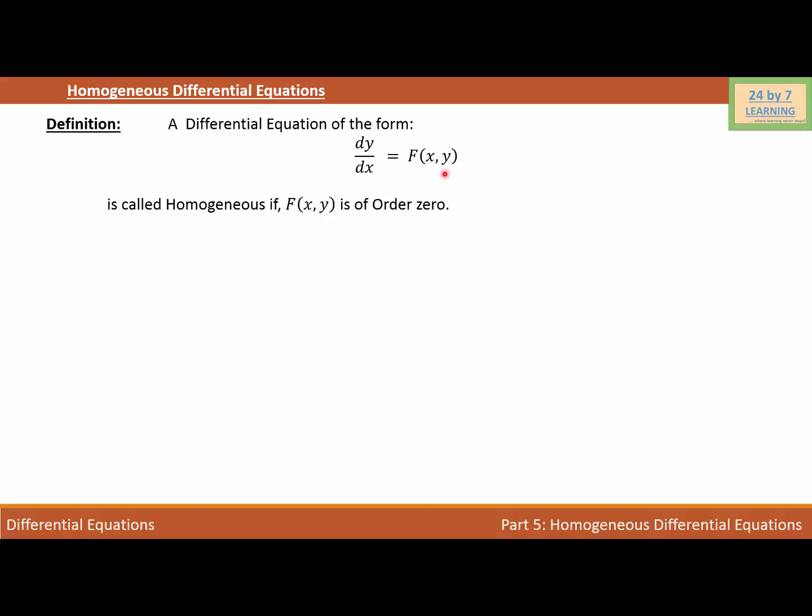If the differential equation is written as N(x,y)dy/dx + M(x,y) = 0, where M(x,y) and N(x,y) are functions of x and y of the same degree, then this is also a homogeneous differential equation. We can also write this equation in a different form.